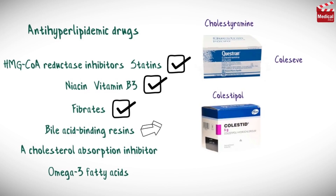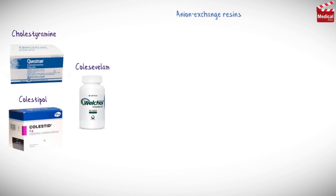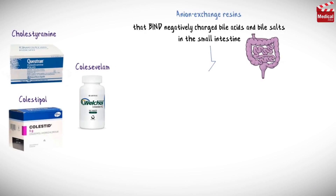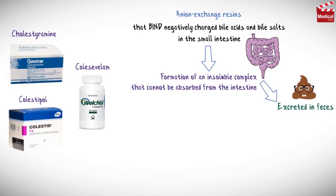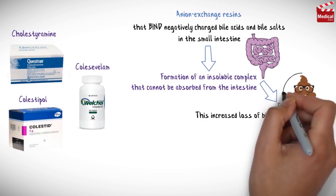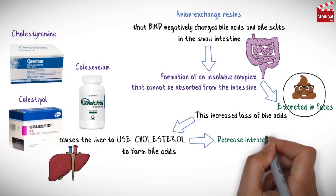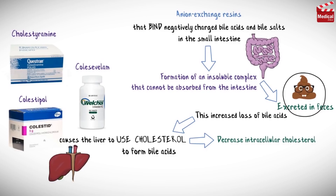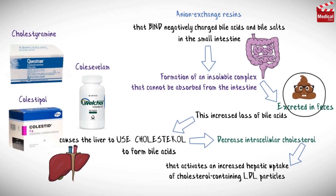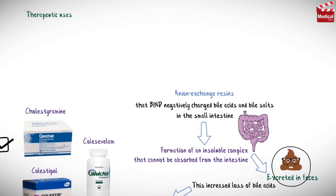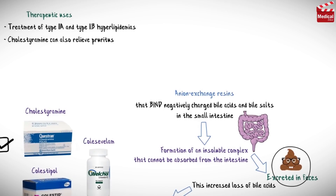Cholestyramine, colestipol, and colesevelam are anion exchange resins that bind negatively charged bile acids and bile salts in the small intestine, leading to the formation of an insoluble complex that cannot be absorbed. So it is excreted in feces. This increased loss of bile acids causes the liver to use cholesterol to form bile acids, followed by a decrease in intracellular cholesterol concentrations, which activates increased hepatic uptake of cholesterol-containing LDL particles, leading to a fall in plasma LDL. They are used in the treatment of type 2a and type 2b hyperlipidemias.